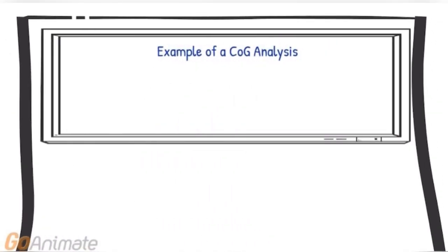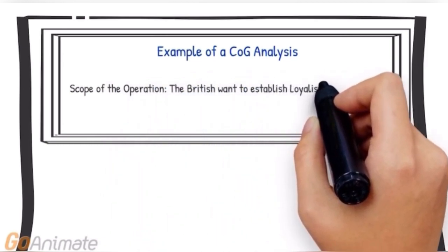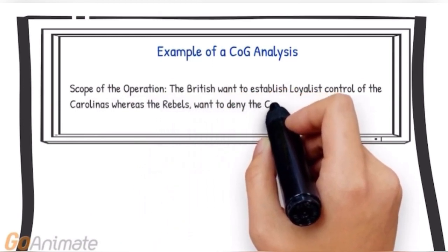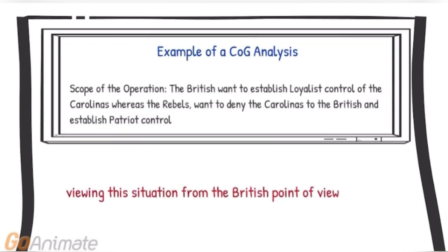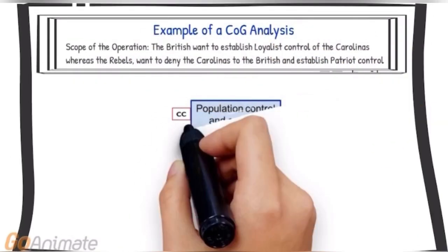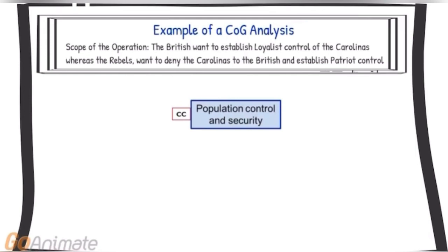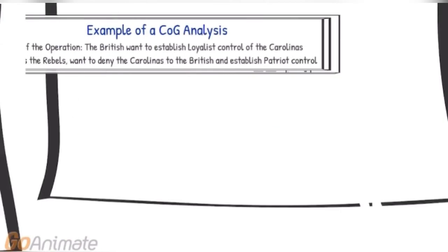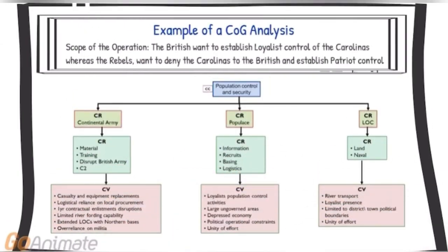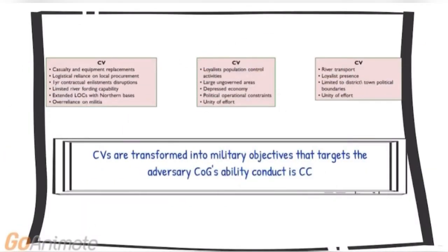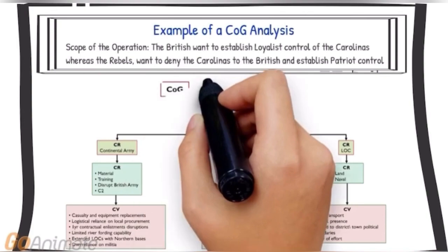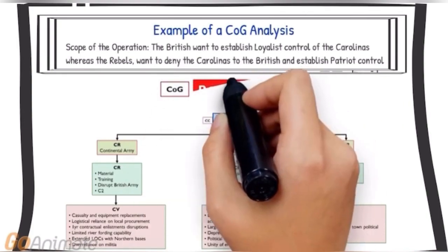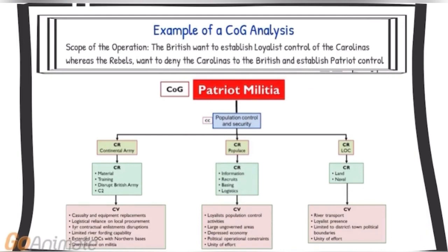This video will explain about center of gravity analysis. How is the analysis conducted? First, determine the adversary's goal. In this example, the rebels — the British adversary in the southern campaign of the American Revolution — want to eliminate British military presence and loyalist governance, and instead establish patriot governance and control. To accomplish their desired end state, they must establish control and security of the populace — the critical capability. The analyst analyzes each of the critical requirements to identify inherent vulnerabilities. These critical vulnerabilities become military objectives along various lines of operation, focusing on disrupting the center of gravity. To identify the center of gravity, we ask which adversarial entity has the ability to conduct the critical capabilities. In this case, the Patriot Militia is the only rebel entity able to conduct the critical capability and achieve the end state. Identification of the center of gravity was delayed until the analysis of the critical factors was completed.